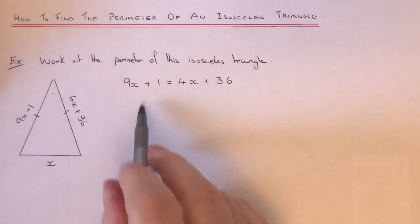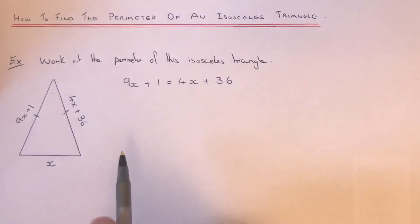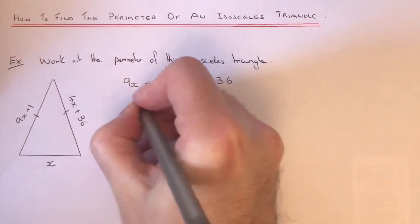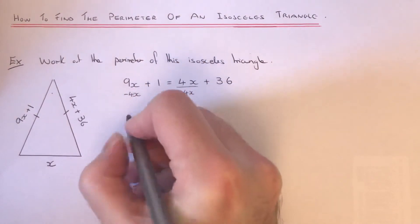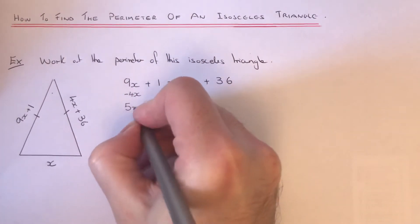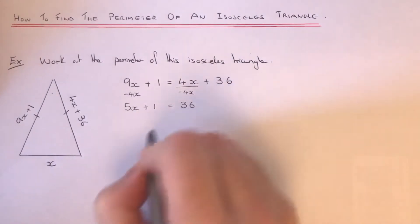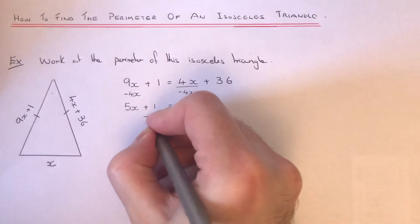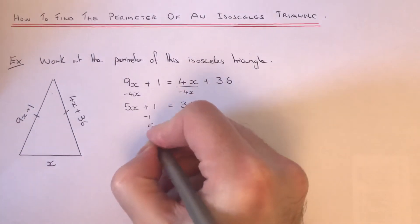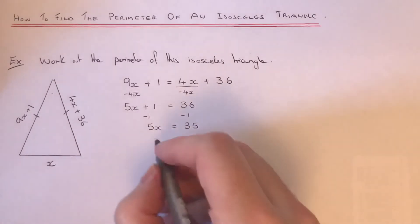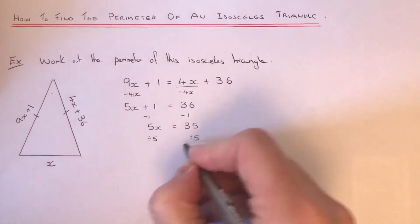So what we've done is set up an equation and we just need to find the value of x. So let's get rid of the 4x by taking 4x off both sides. So that will give me 5x plus 1 equals 36, and then take 1 off both sides which gives us 5x equals 35, and divide by 5 which gives us x equals 7.